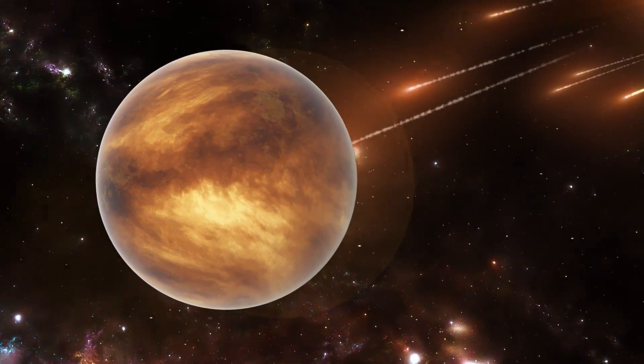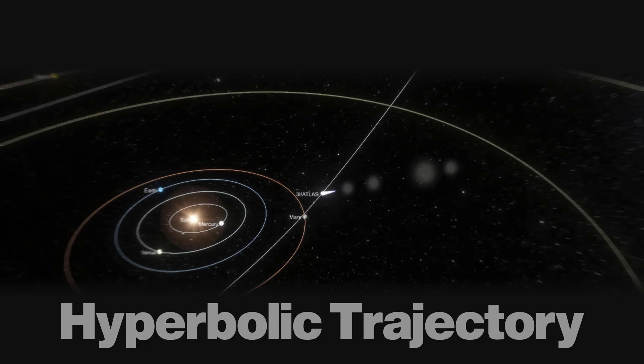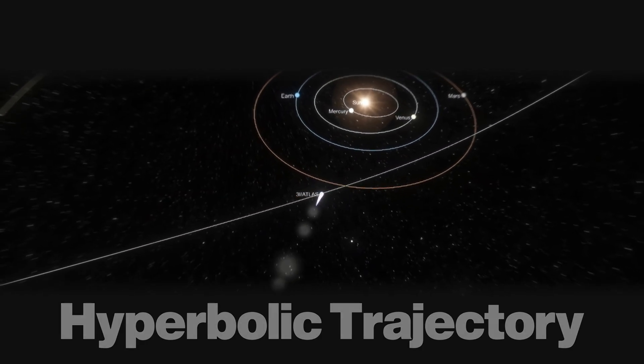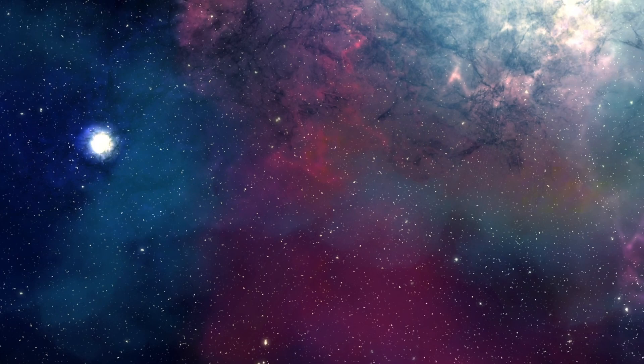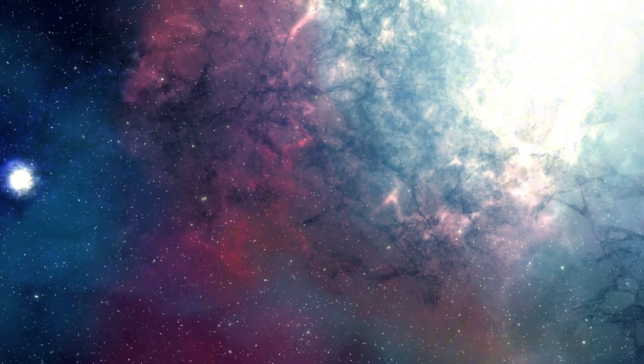This wasn't just another space rock. 3I Atlas was traveling on what scientists call a hyperbolic trajectory, meaning it's moving so fast that our sun's gravity can't capture it. It's a visitor from another star system, and it's only the third interstellar object we've ever detected.